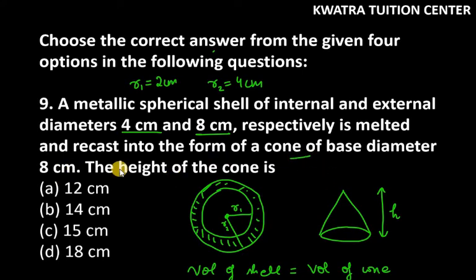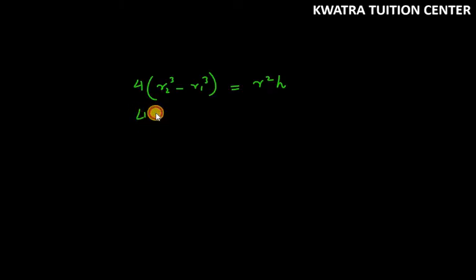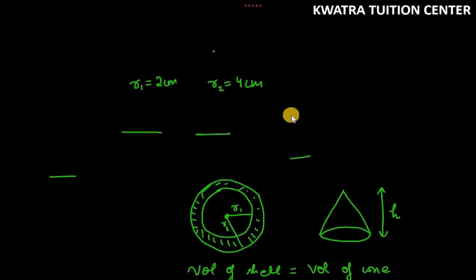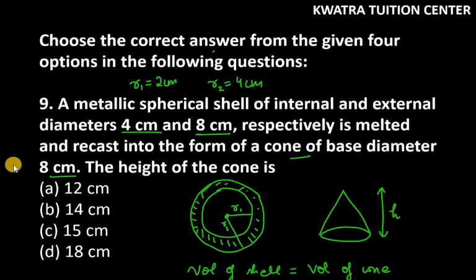And the cone's radius will be 4. So this is 4, 4 cube minus 2 cube is equal to r of the cone. It was 4. Since diameter is given, this means radius is 4 cm.